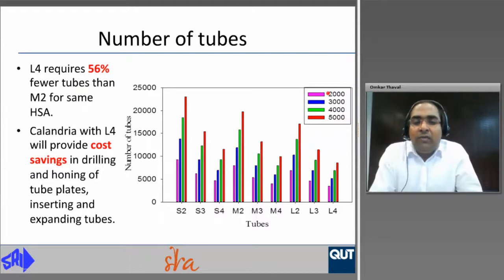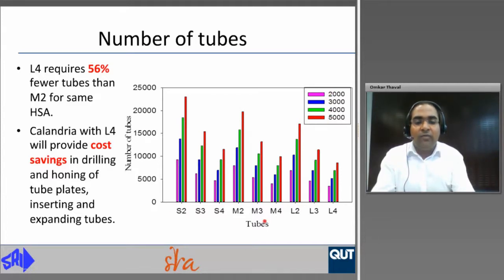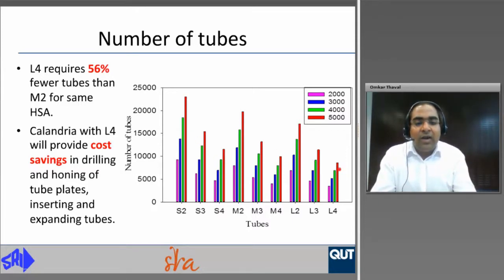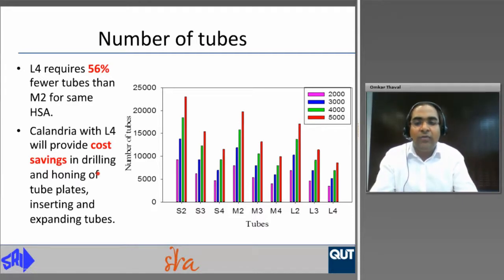Once the model was developed, we looked at the different outputs. For the number of tubes, it is seen that the large diameter and 4 meter tube has 56 percent fewer tubes for the same heating surface area. Calendrias with large diameter and 4 meter tubes will provide cost savings in drilling and honing of tube plates and in inserting and expanding tubes.